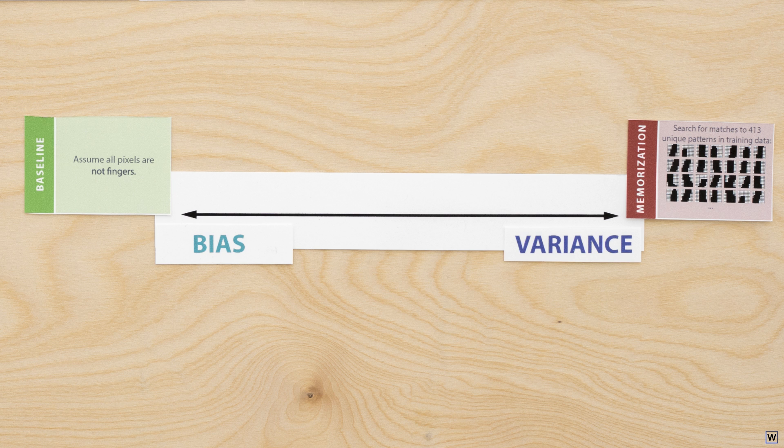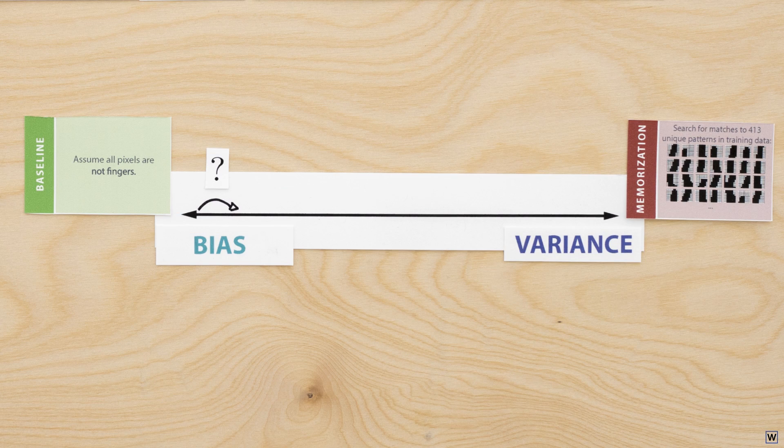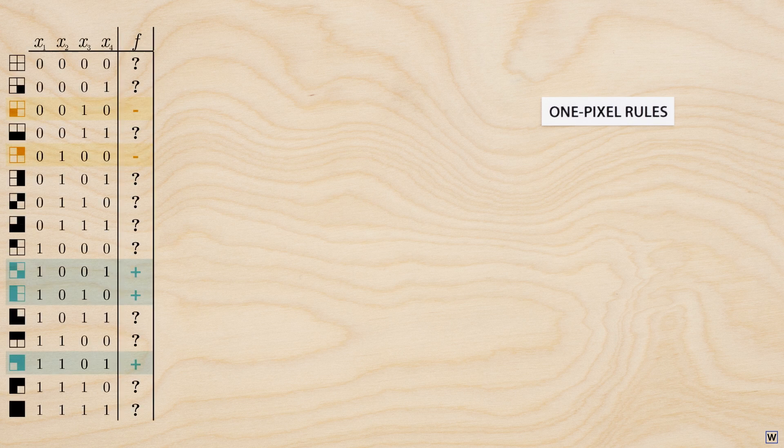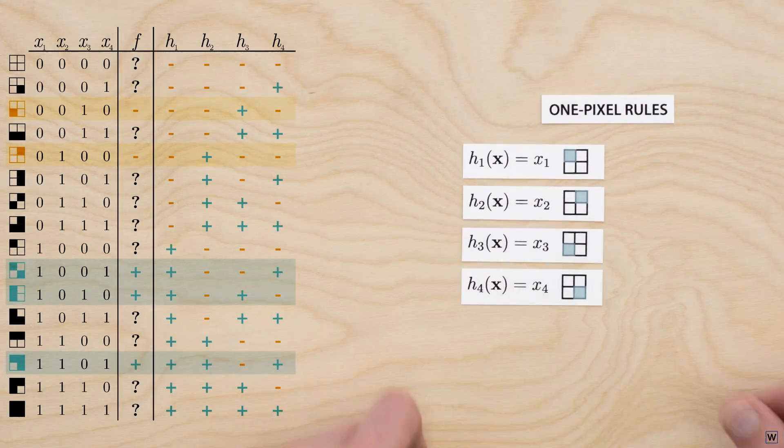We know we want to live somewhere on our bias-variance spectrum, but where? Let's start on the high-bias-low-variance side and experiment. Our baseline strategy is clearly too simple. How can we make it a little more complex? One option is to use our approach from last time and search for rules that use just one pixel while ignoring the rest.